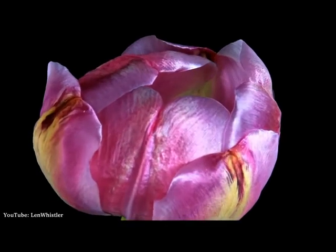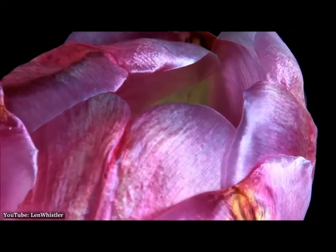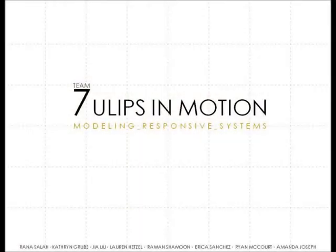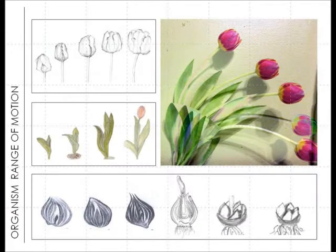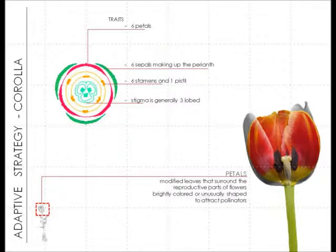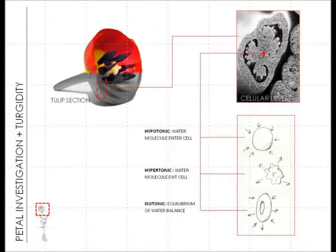In case you haven't, please sit back and expand your mind through our exploration of Tulips in Motion. The turgidity within the tulip's petals allows the organism to thrive in many environments, opening and closing as a means of protection and reproductive purposes. The tulip petals' ability to open and close is controlled by the process of osmosis within the cell structure.